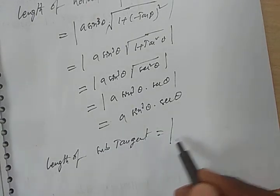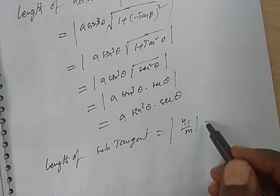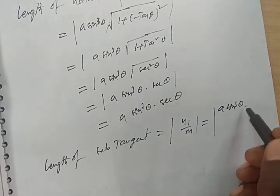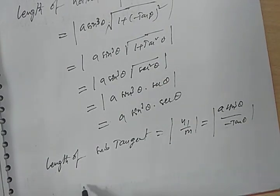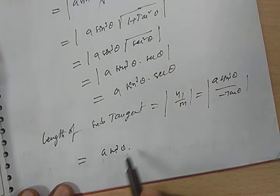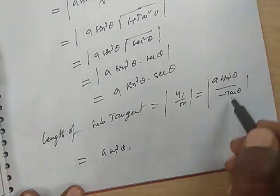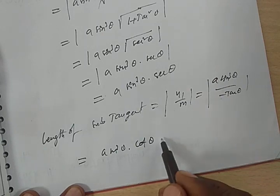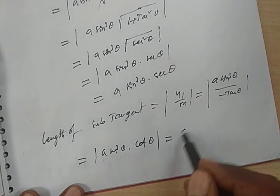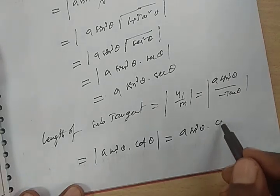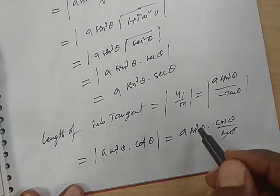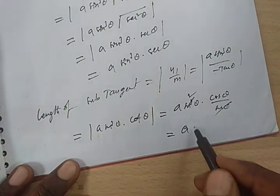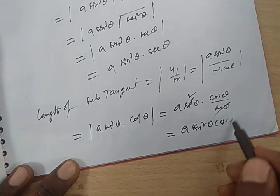Next, find the length of sub-tangent. The formula is |y₁/m|. Substituting: y₁ = a sin³θ divided by −tan θ. Removing the minus (modulus), and writing 1/tan θ = cot θ = cos θ/sin θ, one sin cancels, so the length of sub-tangent equals a sin²θ · cos θ.